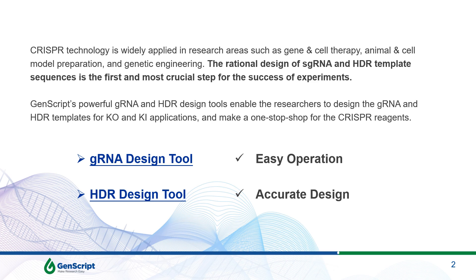The rational design of guide RNA and HDR templates is the first and most crucial step for a successful CRISPR experiment. GenScript's powerful guide RNA and HDR design tools enable researchers to design guides and HDR templates for CRISPR knockout and knock-in applications. They provide a one-stop shop for all the CRISPR reagents needed. The guide RNA and HDR design tools are made for easy operation. We provide free tutorial videos and user guides to walk you through the whole design and ordering process.